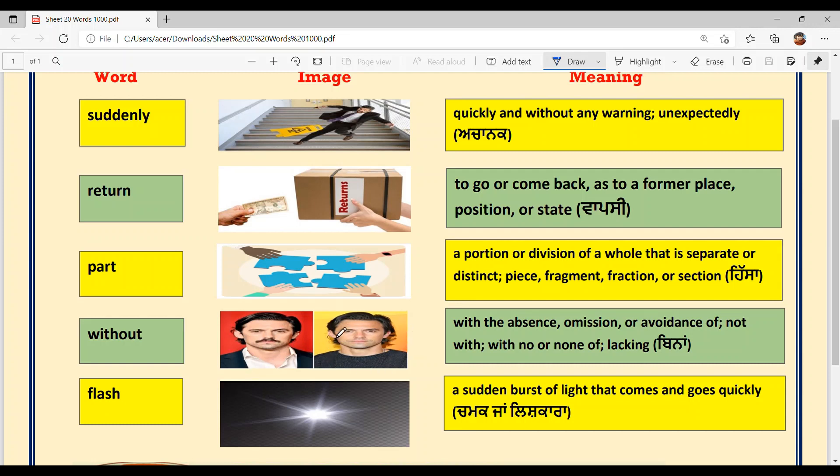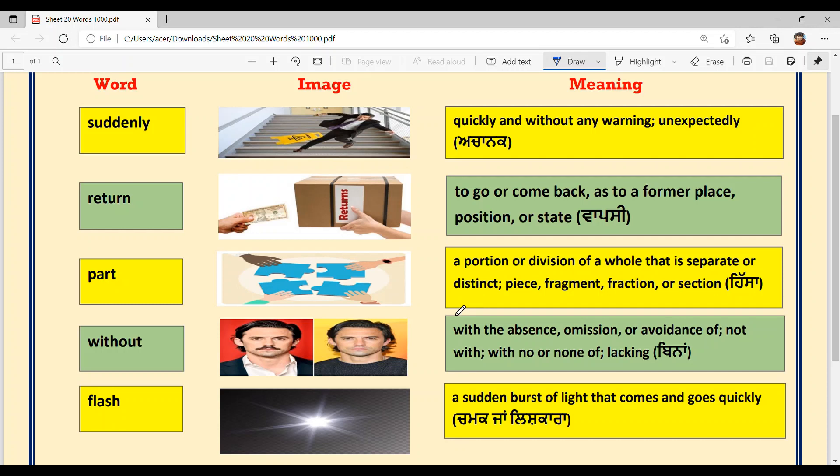But next picture is without moustache. I say without word and use kar sakte haan. She came to the party without her kids. Ho aapne bacheyan de bina party te aa gai. Understood?